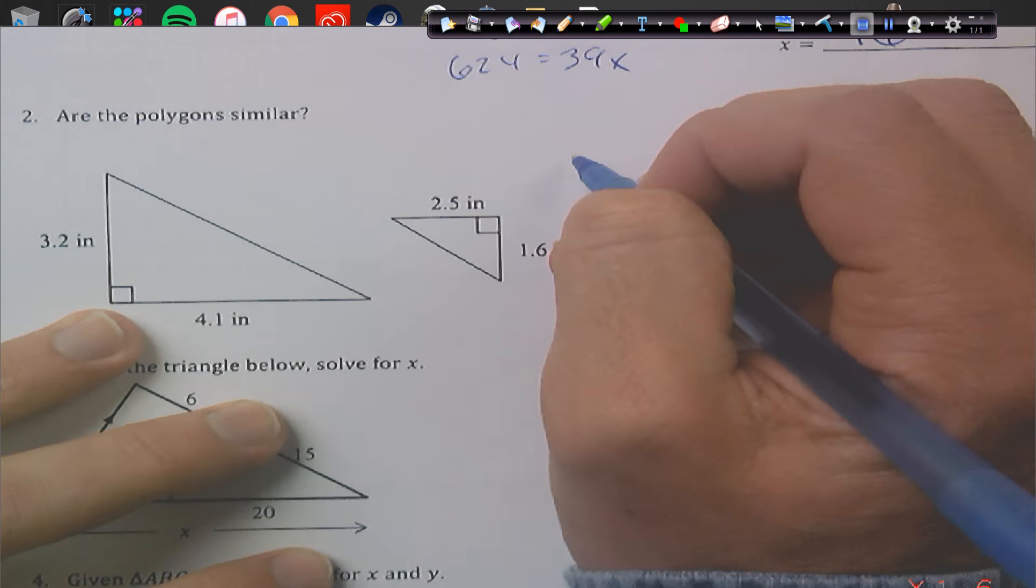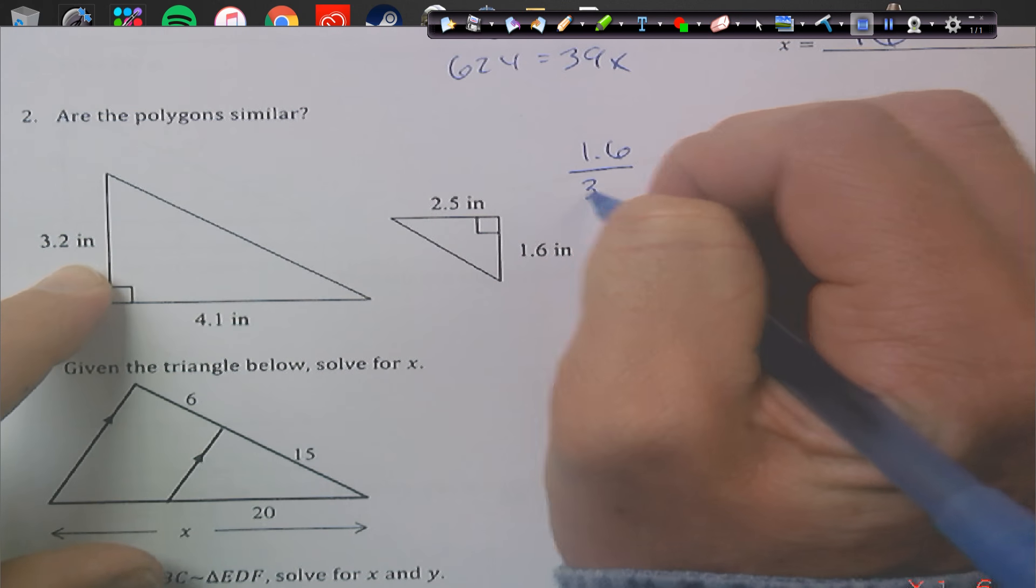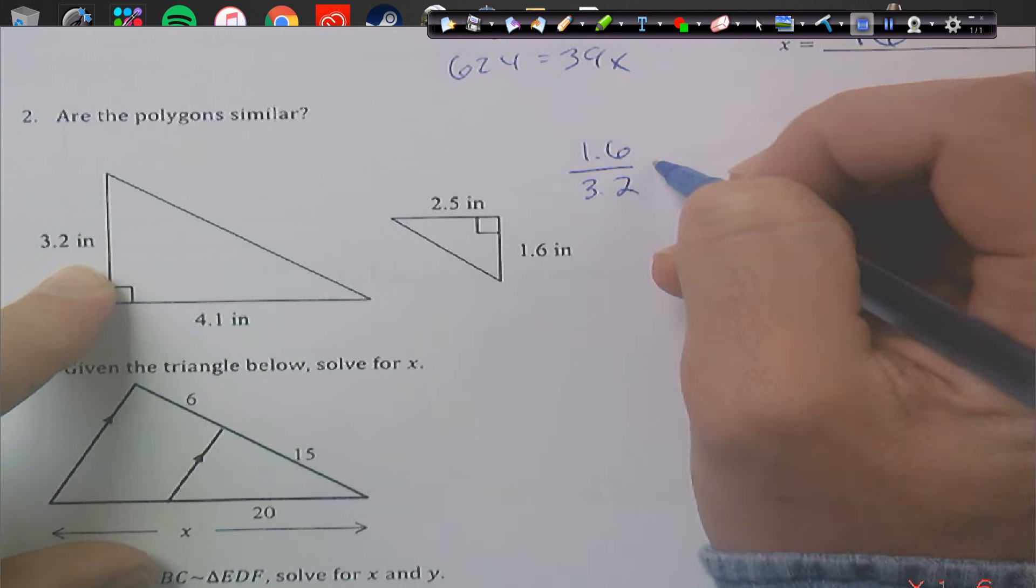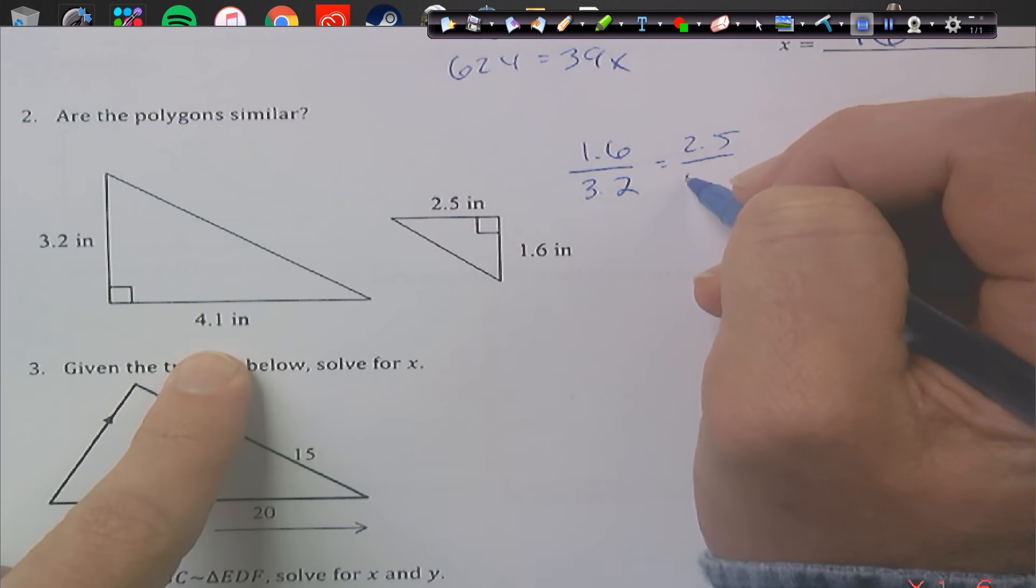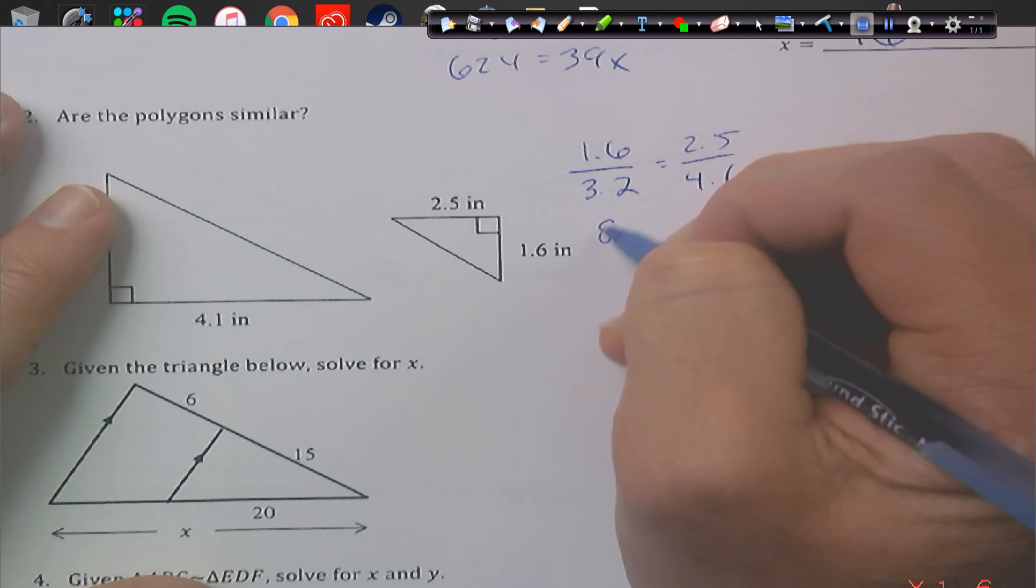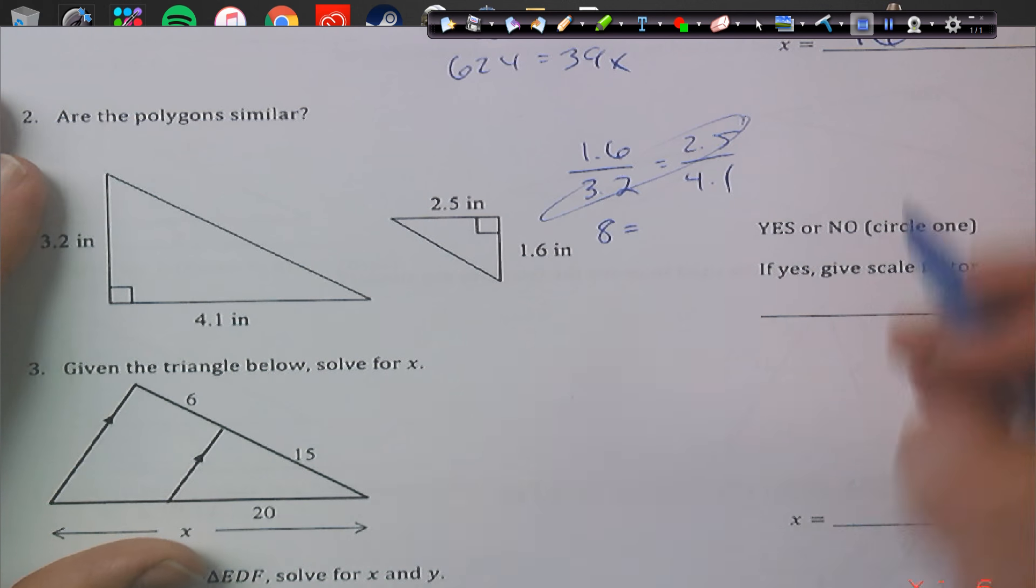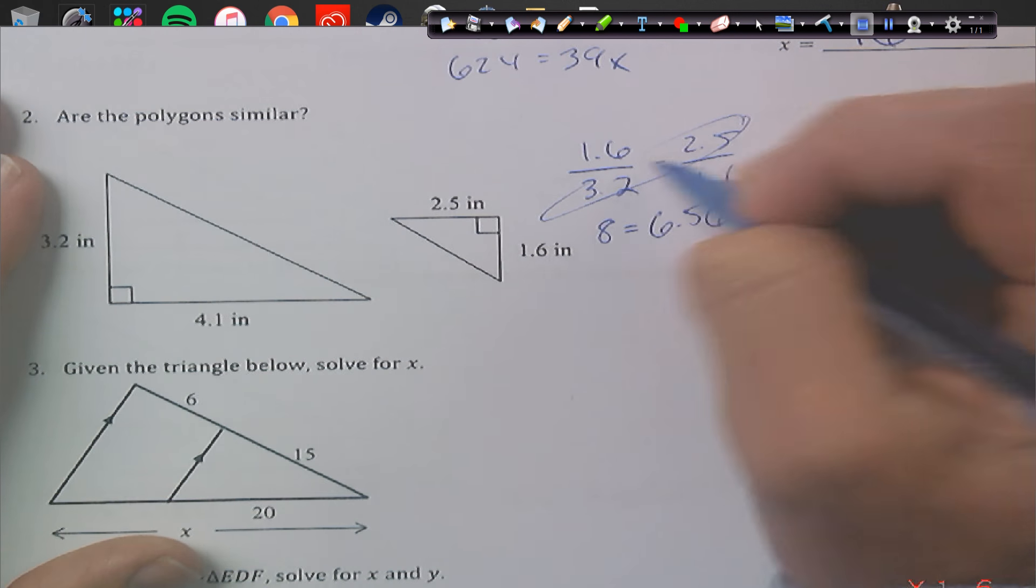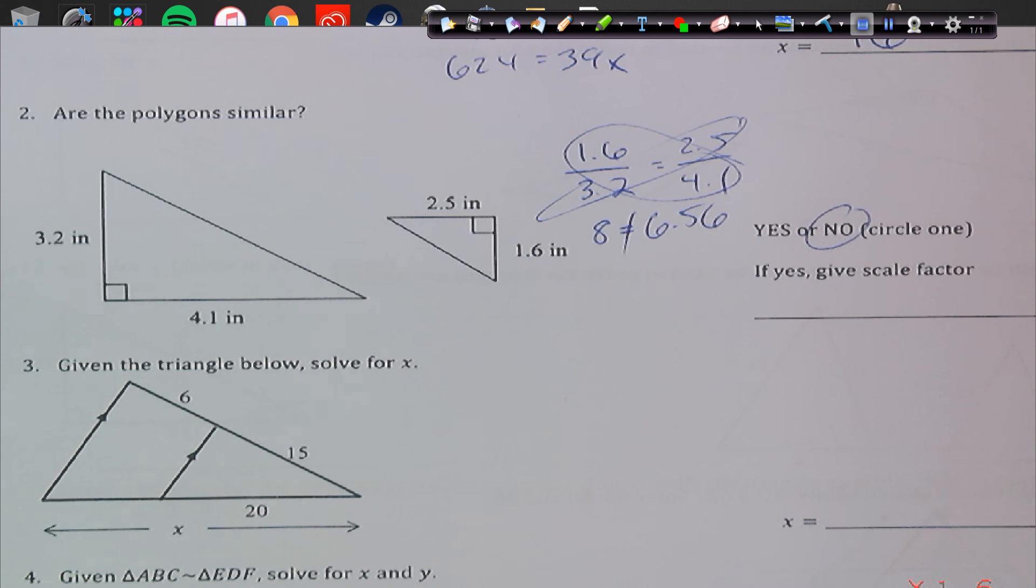So I'm going to put small over small, so 1.6 over 3.2. So this is small and small, and see if that is congruent to large to large. Okay, so if we cross multiply this, and these numbers are the same, 3.2 times 2.5. So we get 8 on that cross, and then 1.6 times 4.1, and we get 6.56. They're not similar, no.